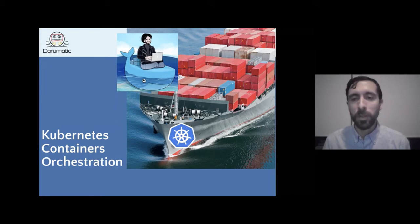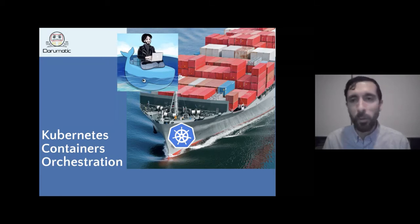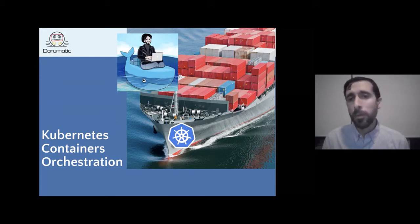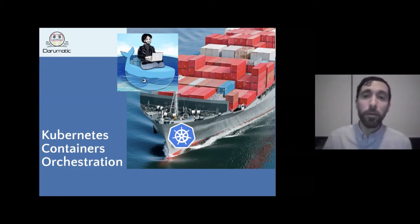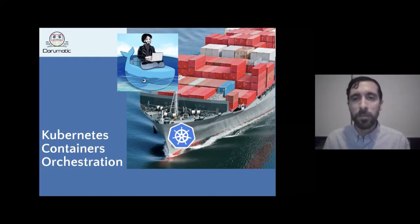From Borg came self-healing: your application heals automatically because the system knows the desired state. If you want three copies of your nginx and one machine falls, Kubernetes will ensure you still have three copies. Another key innovation was the separation of concerns — your deployment, how you publish it, your configuration, and your secrets are all loosely coupled, highly cohesive objects you can combine together.